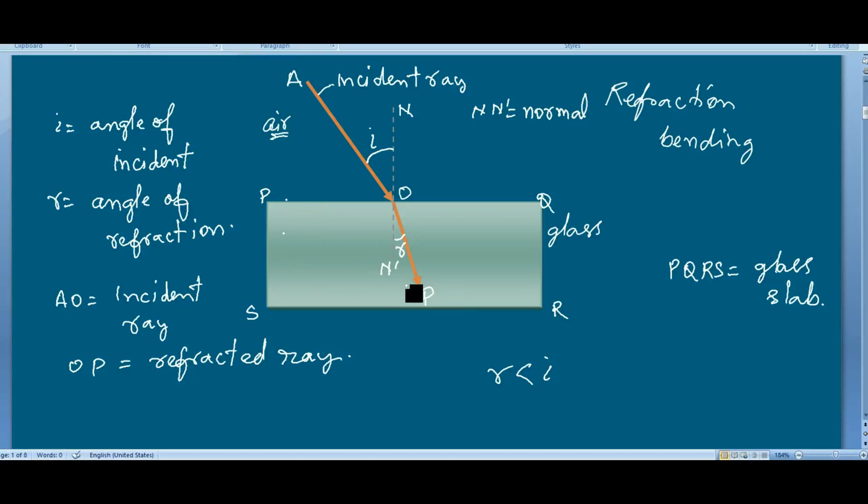The other thing we notice: when we studied the reflection of light, the angle of incidence was equal to the angle of reflection. But in case of refraction, the angle of refraction will never be equal to the angle of incidence if the light passes from one medium to another medium.